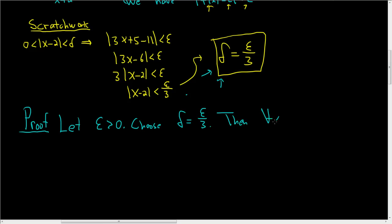Then, for all real numbers x, with the distance between x and 2 smaller than delta, we have... And now we're basically just going to mimic what we have here, but in a more elegant way.